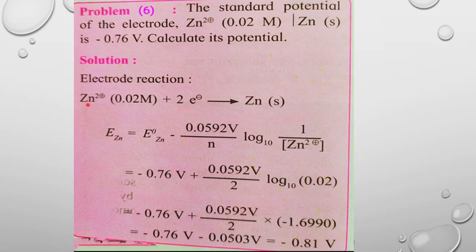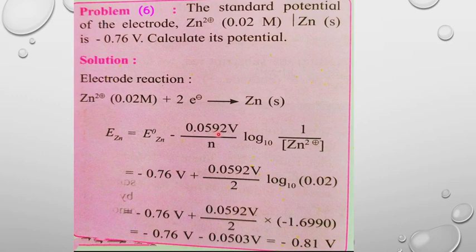In this reduction reaction, the oxidation number decreases from 2+ to 0, confirming it is a reduction reaction. The electrode potential of the zinc electrode is calculated using: E = E°(Zn) − (0.0592 / n) × log([products] / [reactants]).